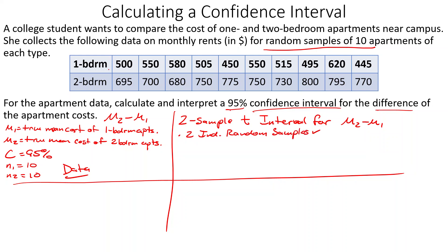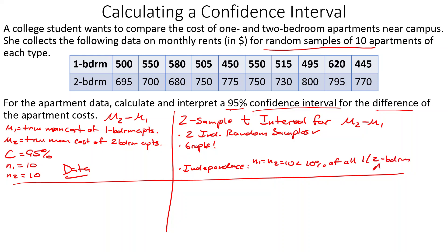Both samples are size 10, so we need to look at graphs since n is less than 30 and they didn't say anything about the population being normal. For independence, n1 = n2 = 10 is probably less than 10% of all one- or two-bedroom apartments — as long as there are more than 100 apartments of each type out there, that's okay.